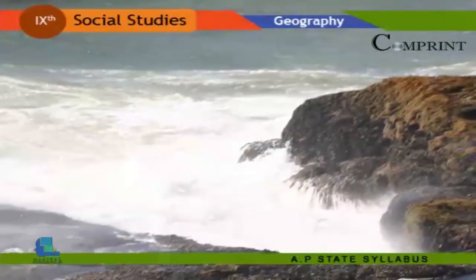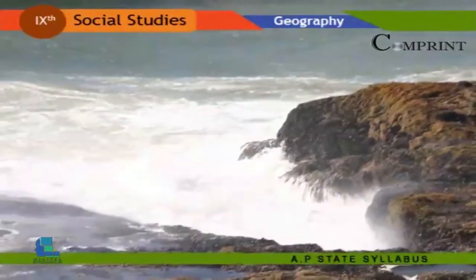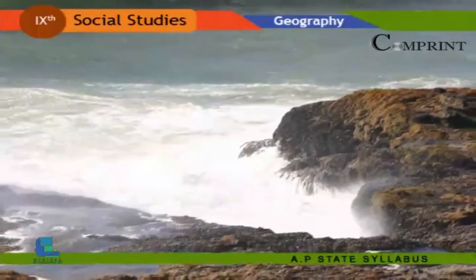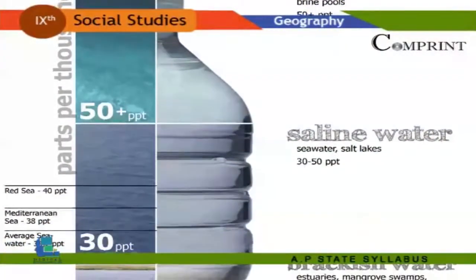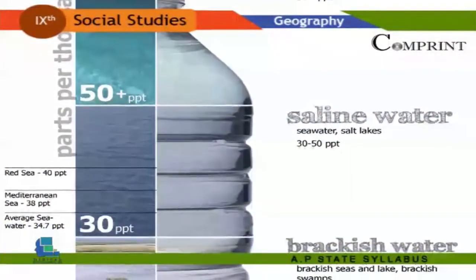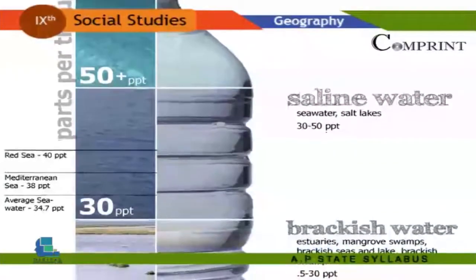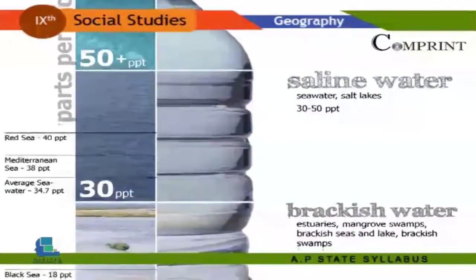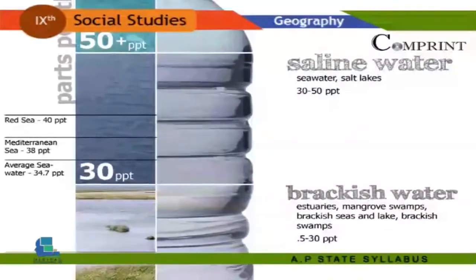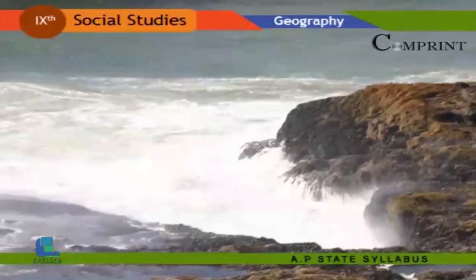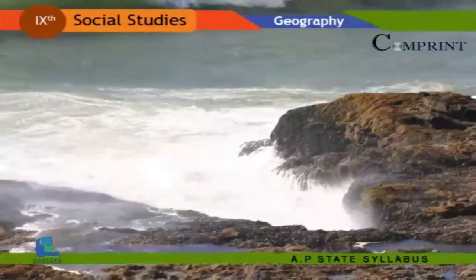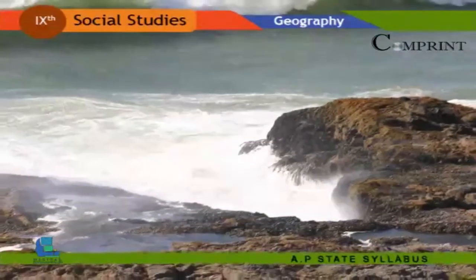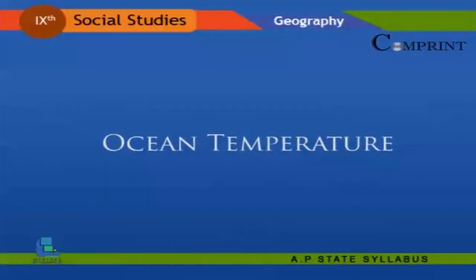Salinity is the term used to define the total content of dissolved salts in sea water. It is calculated as the amount of salt dissolved in 1,000 grams of sea water and is usually expressed as parts per thousand (PPT). Generally speaking, the average salinity of the oceans is 35 PPT, or about 35 parts of salt per 1,000 parts of water.